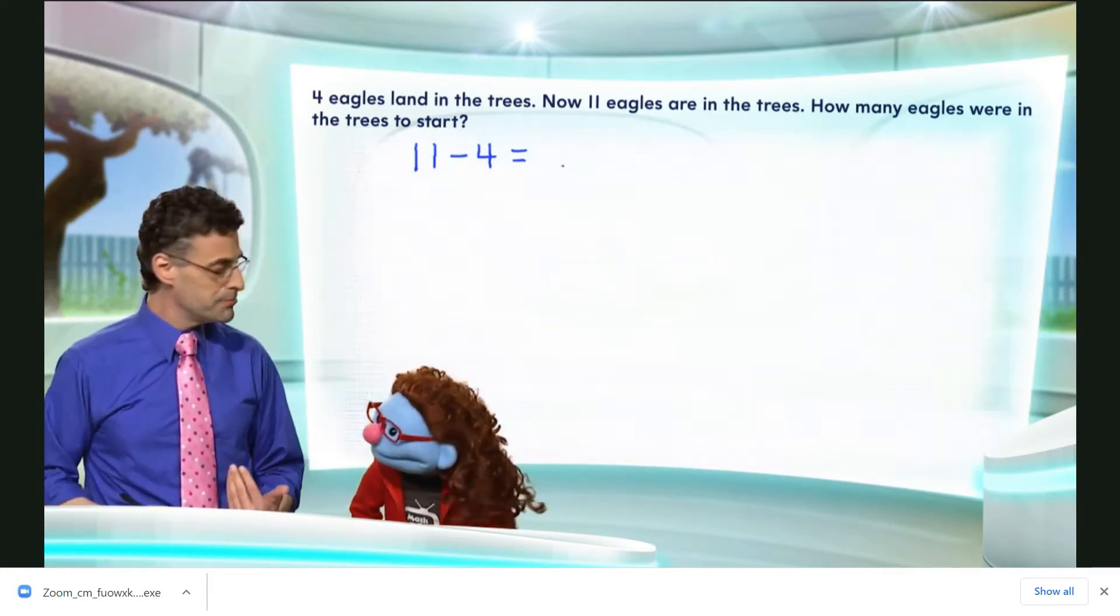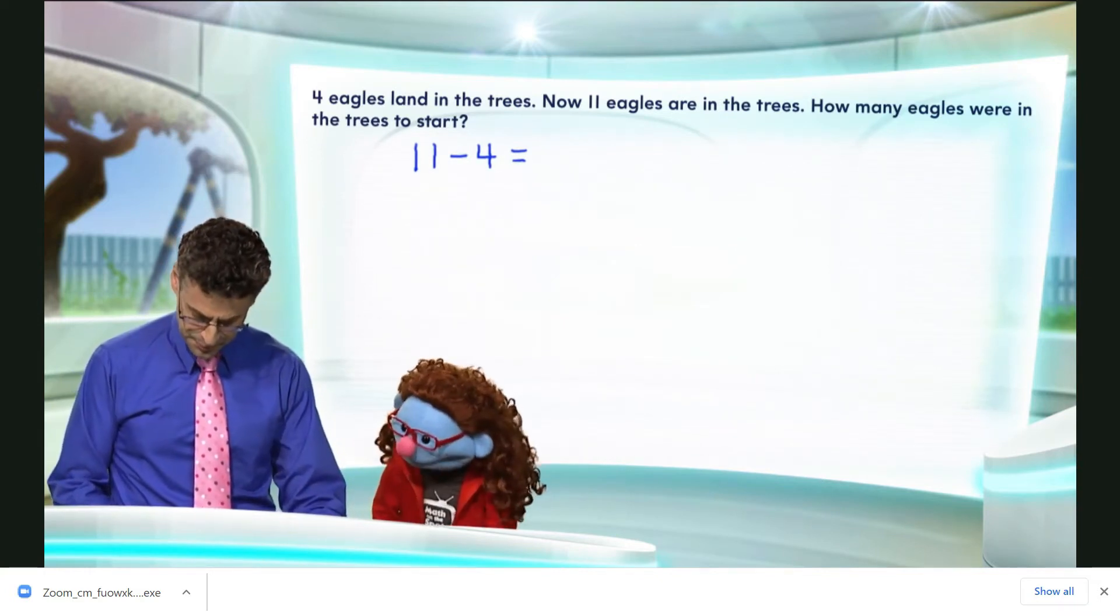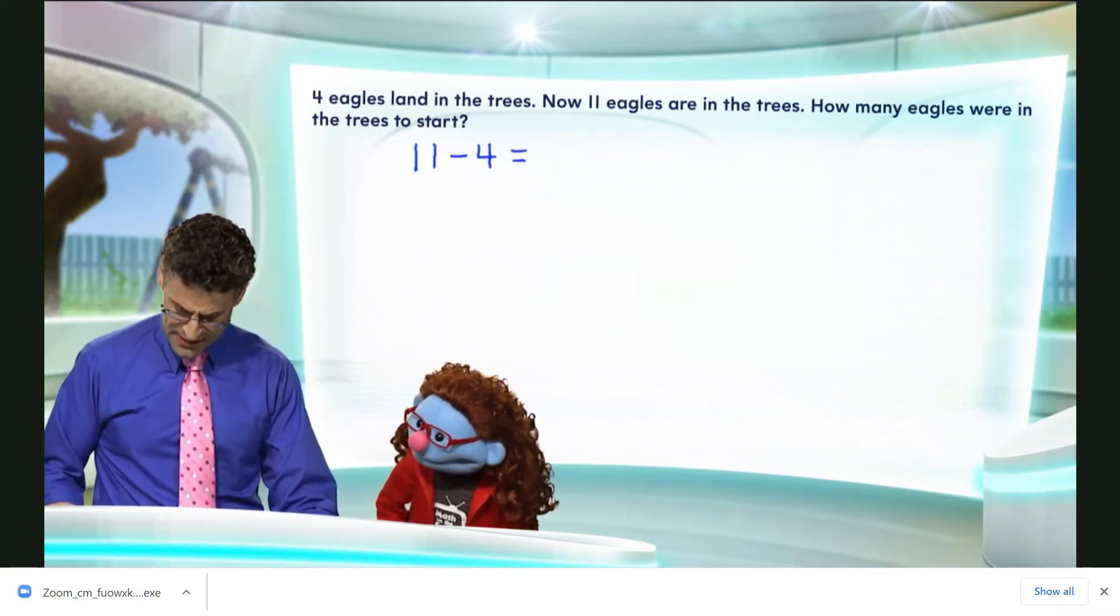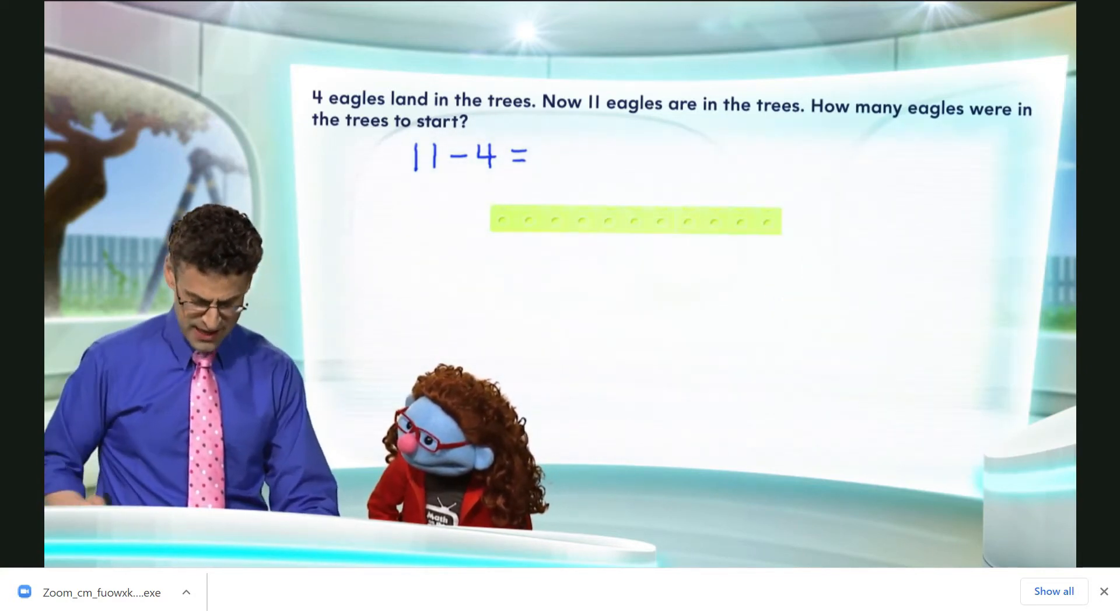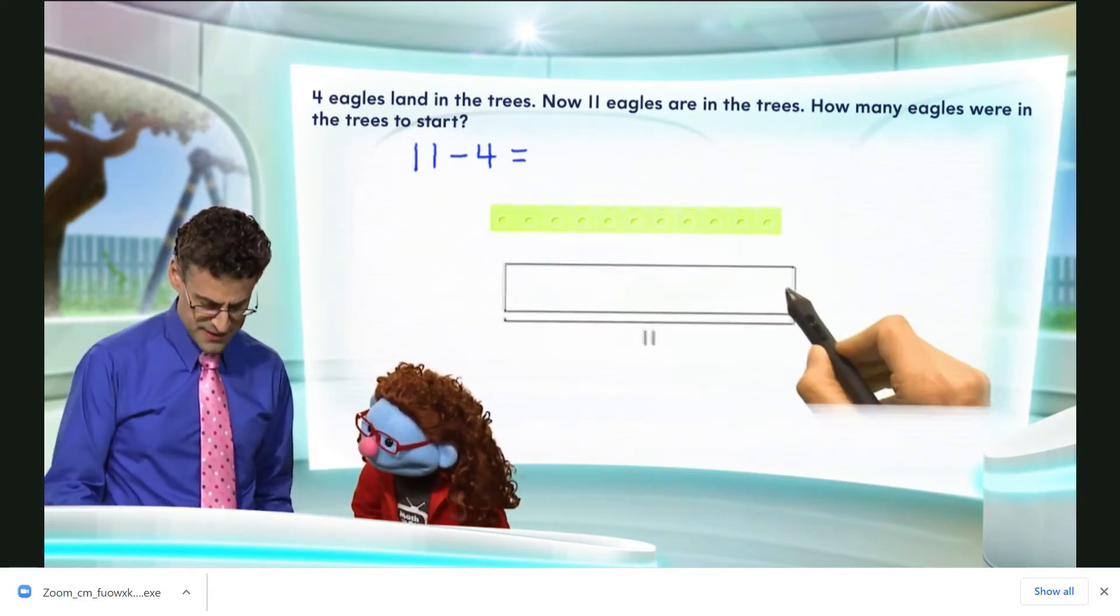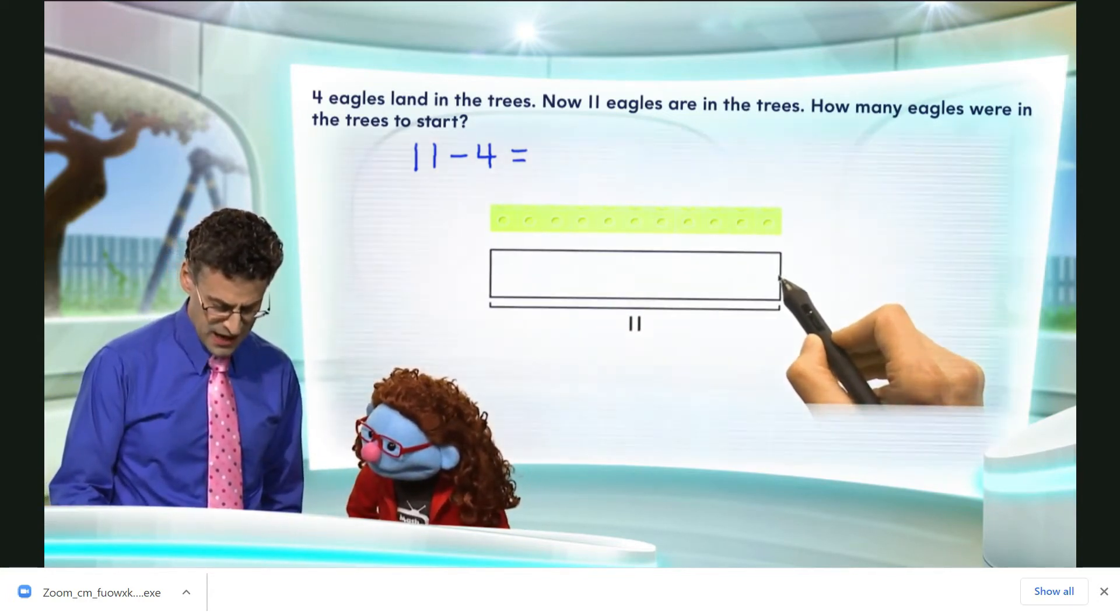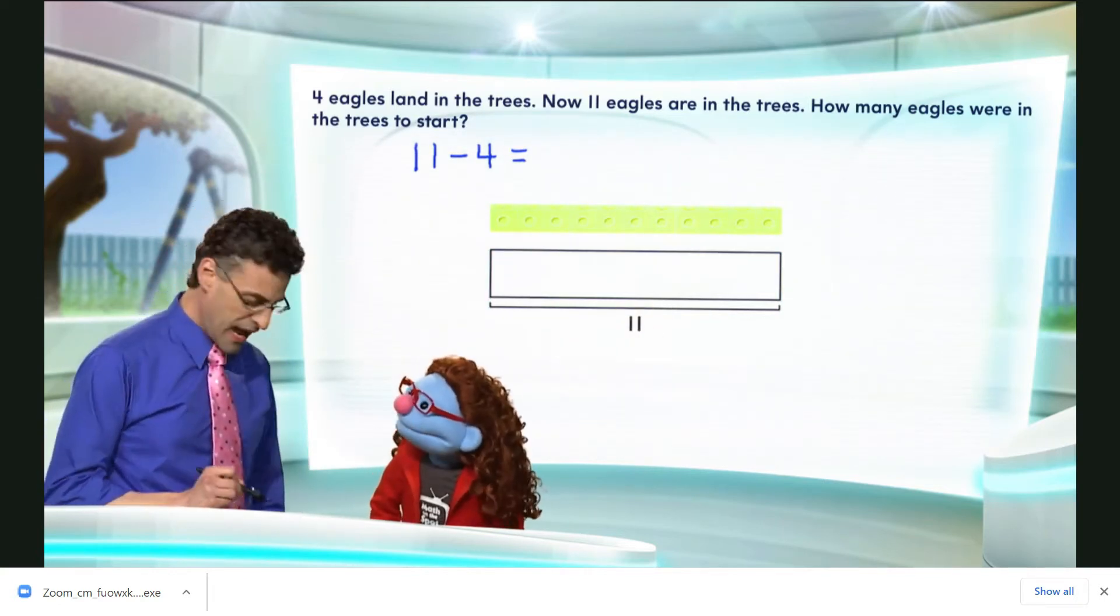Perfect. Okay, so we can actually model this, and one way to model it is to say, well, let's just take the 11 eagles and represent them by connecting blocks, let's say, and we could actually model this like this. So that entire length is representing the 11 eagles. Oh, great! Okay.